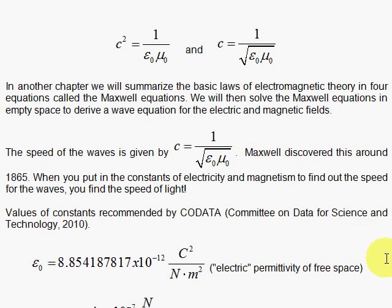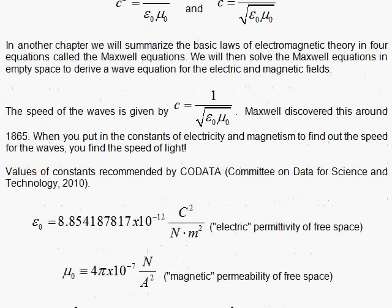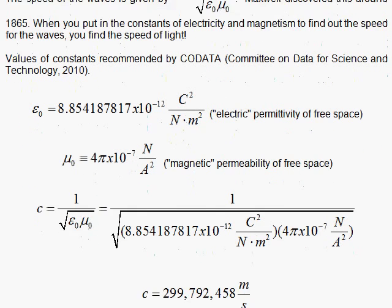Well, let's plug in those constants with current day numbers. And if we do that, we get this value for the speed of light.